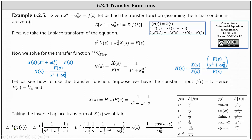On the left, the inverse Laplace transform of X(s) is equal to x(t). On the right, to find the inverse Laplace transform of this product, we perform partial fraction decomposition. The result is the inverse Laplace transform of one over omega sub zero squared times one over s, minus one over omega sub zero squared times s divided by the quantity s squared plus omega sub zero squared. This gives x(t) equals one minus cosine of omega sub zero t, all divided by omega sub zero squared. This indicates if the input is f(t) equals one, the output is given by x(t).